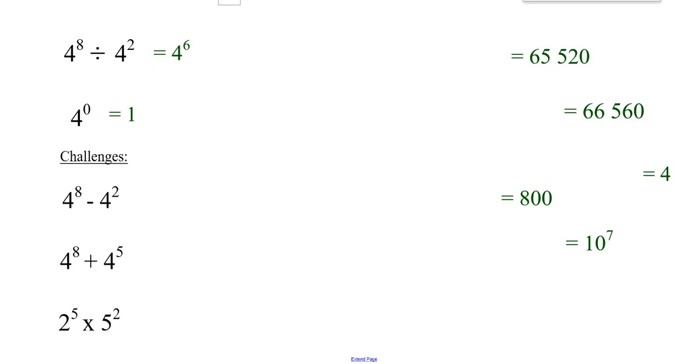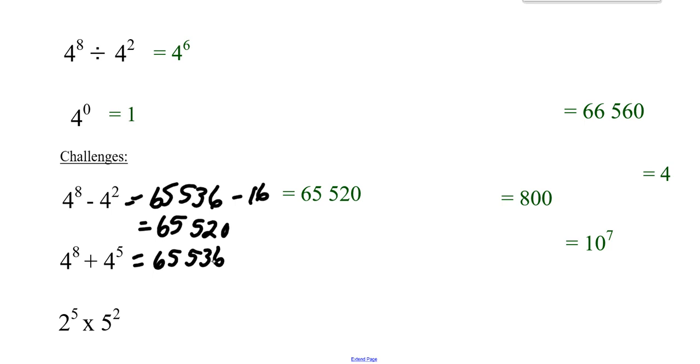So 4^8 is 65,536 minus 4^2, which is 16. That's going to give us 65,520, which is that answer. The next one, again, 4^8 was 65,536 and 4^5 is 1,024. When we add those together, we get 66,560 for that one.